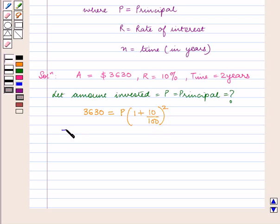This implies 3,630 equals P times (1 plus 1 by 10) raised to power 2, which equals P times (10 plus 1 by 10) raised to power 2.